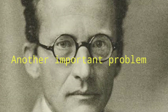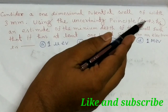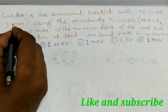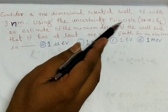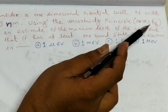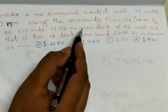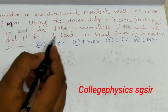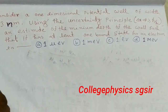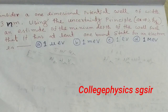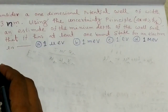Now we discuss another important problem relevant to entrance and trend tests. Consider a one-dimensional potential well of width 3 nanometers. Using the uncertainty principle — where Δx · Δpx ≥ h-bar/2, meaning it is impossible to determine position and momentum simultaneously — estimate the minimum depth of the well such that it has at least one bound state for an electron. Options: one micro-electron volt, one milli-electron volt, one electron volt, one mega-electron volt.